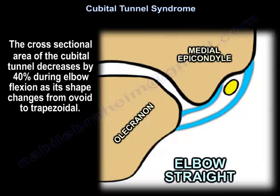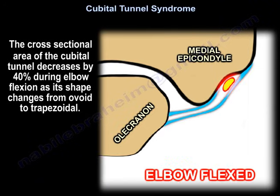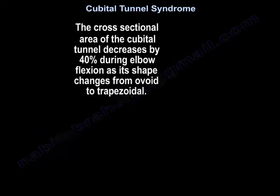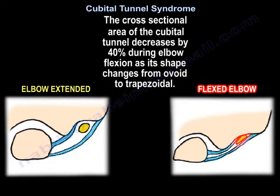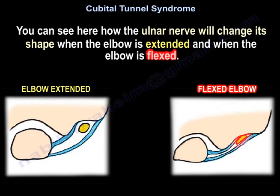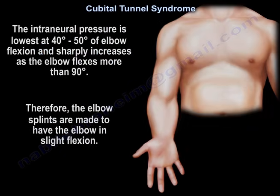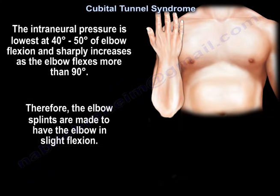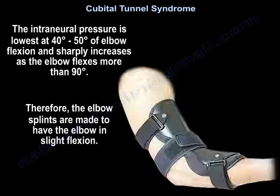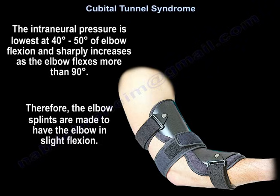The cross-sectional area of the tunnel decreases by 40% during elbow flexion as its shape changes from ovoid to trapezoidal. The ulnar nerve changes its shape when the elbow is extended and when the elbow is flexed. The intra-neural pressure is lowest at 40 to 50 degrees of elbow flexion and sharply increases when the elbow flexes more than 90 degrees. Therefore, elbow splints are made to hold the elbow in slight flexion.